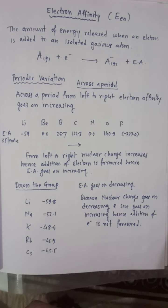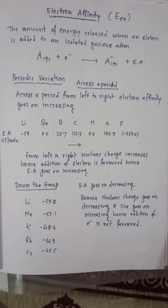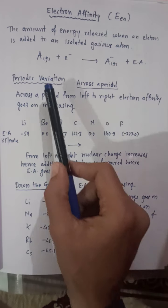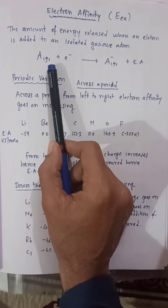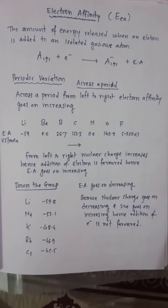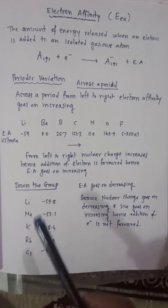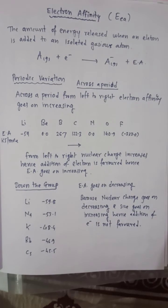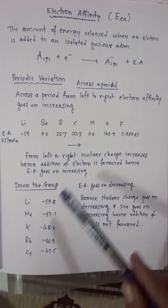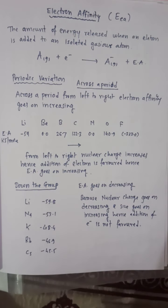What is the definition of electron affinity? It is the amount of energy released when an electron is added to an isolated gaseous atom. Suppose atom A is in gaseous state; if we add an electron to it, there will be a release of energy called electron affinity, and the atom will be converted into an anion in gaseous state.